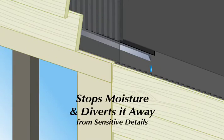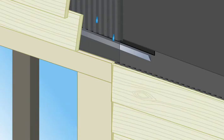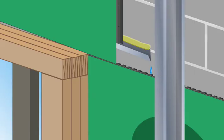This detail stops moisture and diverts it away from the moisture-sensitive wall details for an additional level of protection against entrapped moisture. The Moisture Diverter is designed to work with MTI's exterior and interior drainage plane systems.